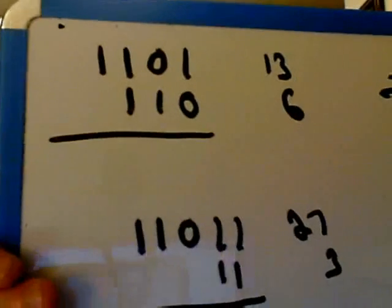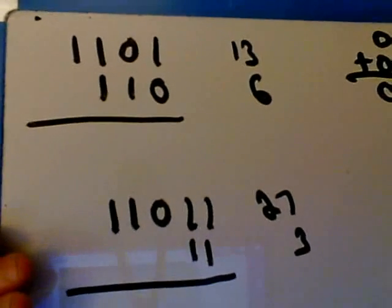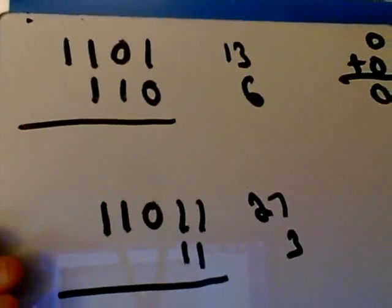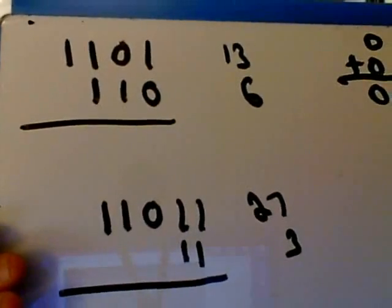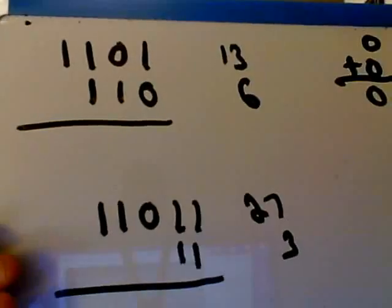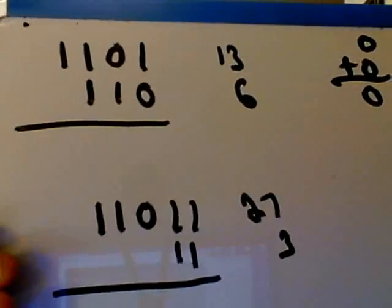Okay, let's take a look at this. Let's add 13 and 6. Now the 13 is represented by 1, 1, no 2s, 1 four, and 1 eight. 8, 4 is 12, and 1 is 13.